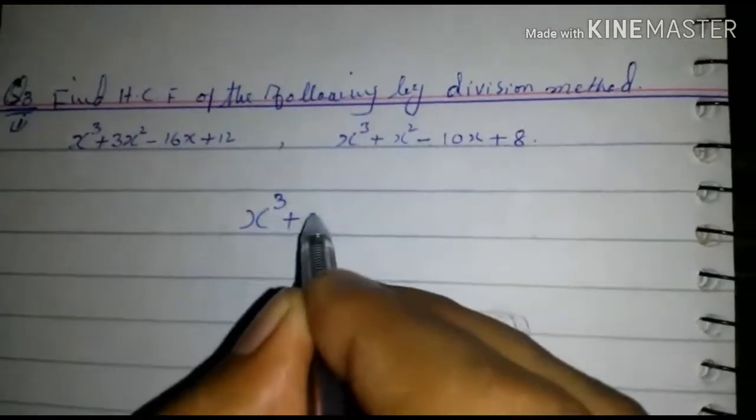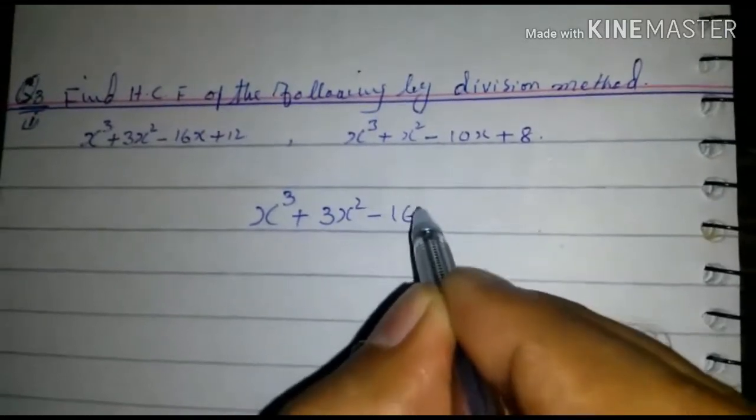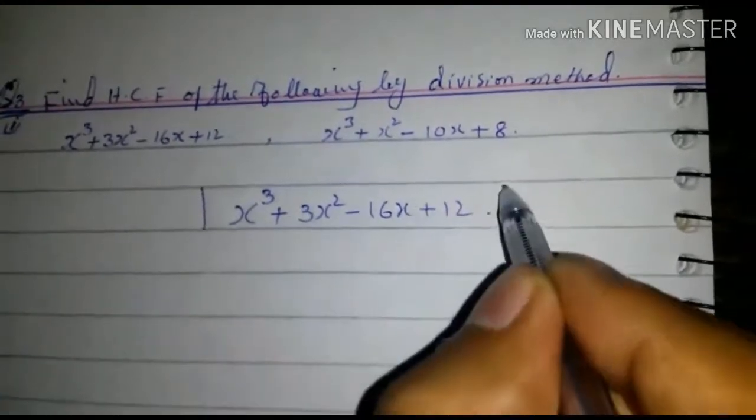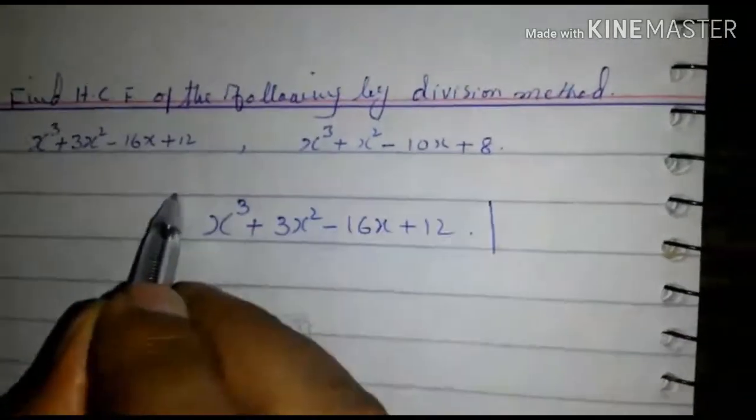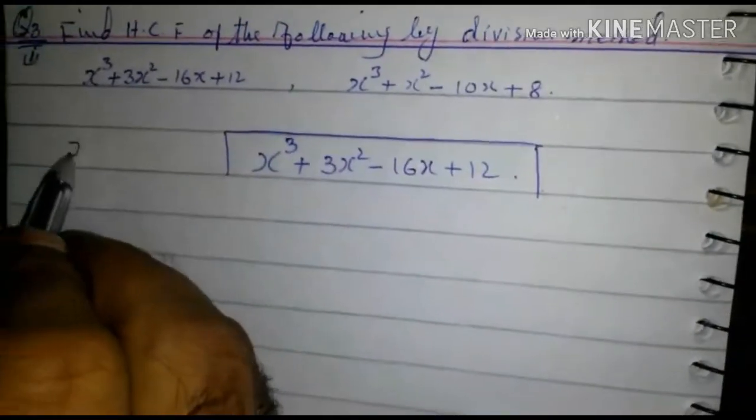x³ + 3x² - 16x + 12, and divide it with the second given expression.